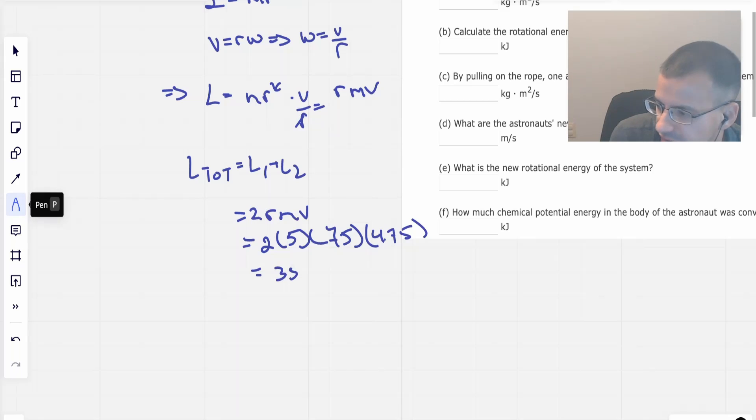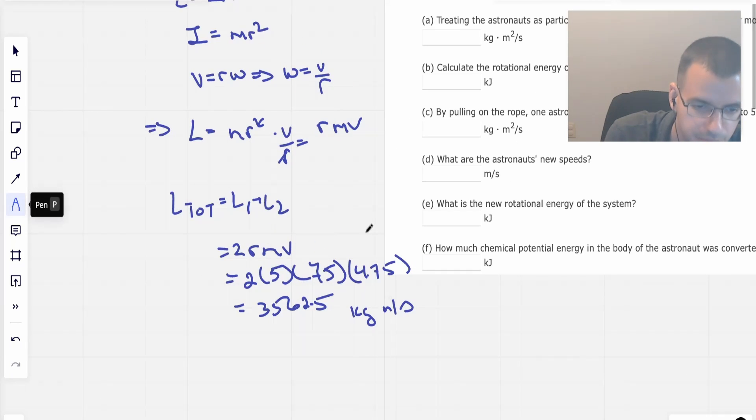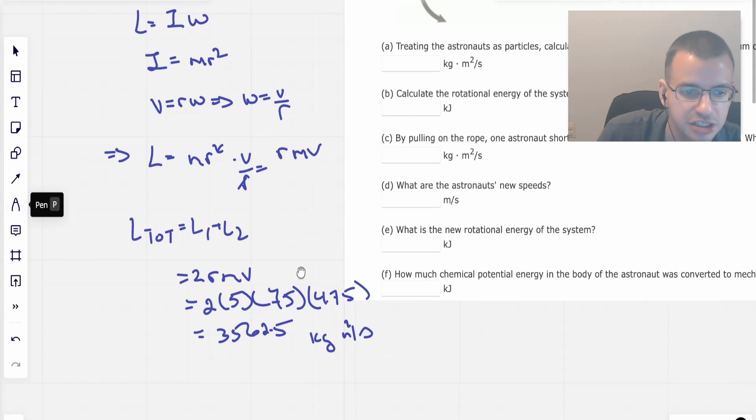This gives us an answer of 3562.5, that's going to be kilograms meters squared per second. So the first answer is 3562.5.